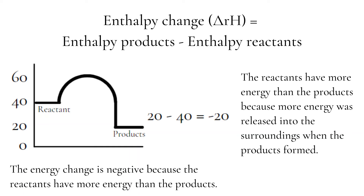So in the energy diagram here, the products now have 20 kJ of energy, and the reactants have 40. So 20 minus 40 is negative 20.